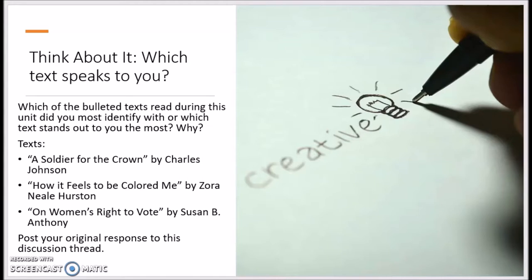The discussion response this week asks you to think about the text that you connect with the most. The writing prompt options are inspired by the text that you've read throughout the unit, so it is important to write about a topic that you feel strongly about. Rest assured that you may pick any of the three writing prompts even if you do not feel strongly about the text that inspired it. The three texts that inspired the writing prompts are A Soldier for the Crown by Charles Johnson, How It Feels to Be Colored Me by Zora Neale Hurston, and On Women's Right to Vote by Susan B. Anthony.